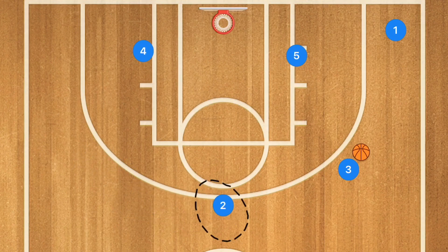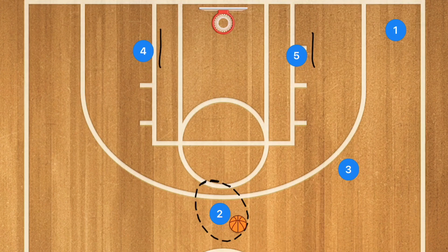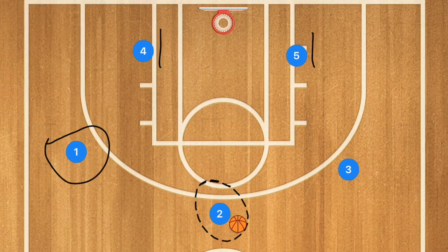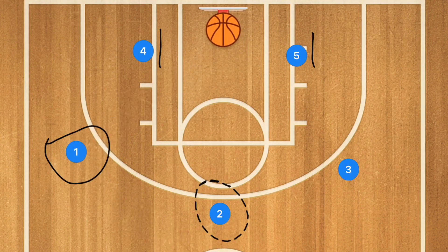If player 1 is not open, player 2 pops up towards the point and player 3 passes to player 2. We're now going to have players 5 and 4 set a double screen for player 1, and player 1 pops out towards the far side. After using that double screen he could be open for a three-point shot, and if he is we really want to see him take that shot.